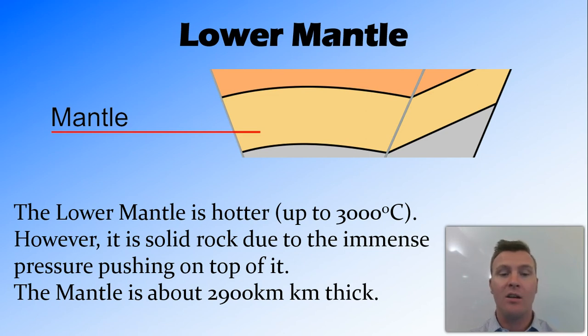So we've got the lower mantle, it's a solid, even though it's super, super hot. And the mantle in total is about 3,000 kilometers thick.